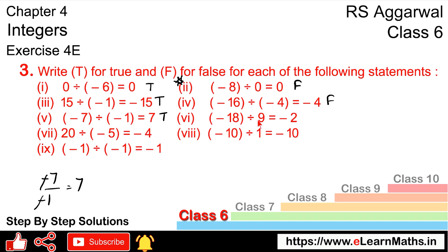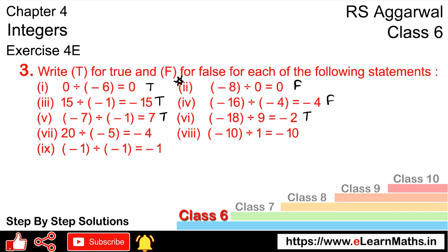Next part: we will divide minus eighteen by nine, which gives minus two. Minus eighteen divided by nine — nine twos are eighteen — so minus two comes. Hence this statement is TRUE.